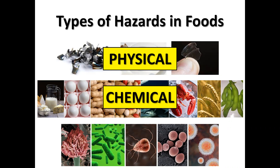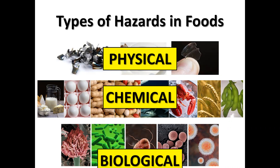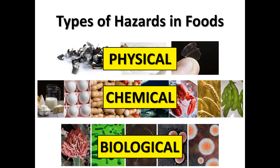Other chemical hazards would include mycotoxins produced by mold growth, and also other chemicals used in food processing or for cleaning and sanitizing. Finally, there may be biological hazards present in food. This includes bacteria, viruses, and parasites that can cause foodborne illnesses.